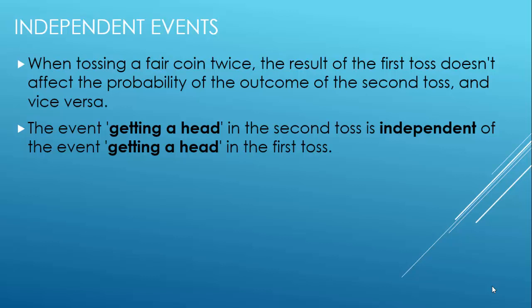When tossing a fair coin twice, the result of the first toss doesn't affect the probability of the outcome of the second toss, and vice versa. Therefore the events are called independent events. The event of getting heads in the second toss is independent of the event of getting heads in the first toss.